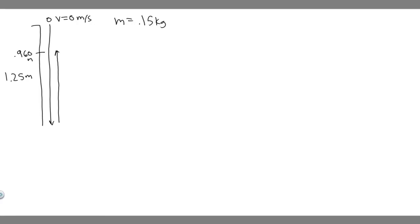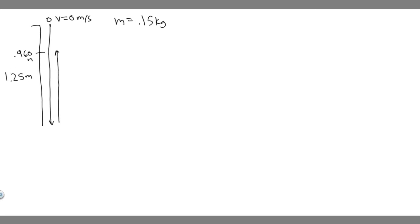In this problem, a ball of mass 0.15 kilograms is dropped from rest from a height of 1.25 meters. It rebounds from the floor to reach a height of 0.960 meters. We need to find the impulse that was given to the ball by the floor.